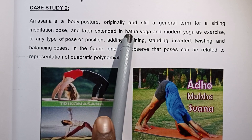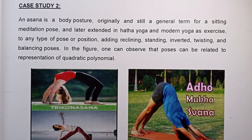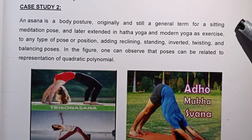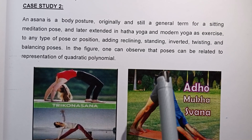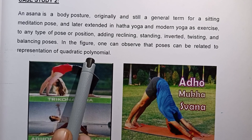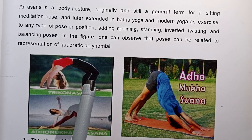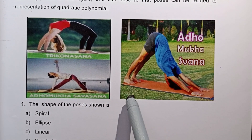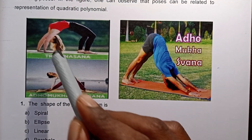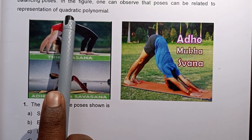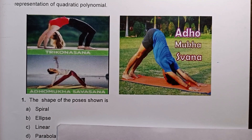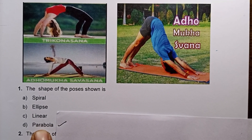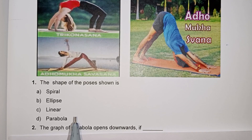Asana is the body posture. Similarly, it is the general term for sitting in a meditation pose. The yoga asana pictures show a U-shaped curve. This is the first detail about the graph of the pattern.